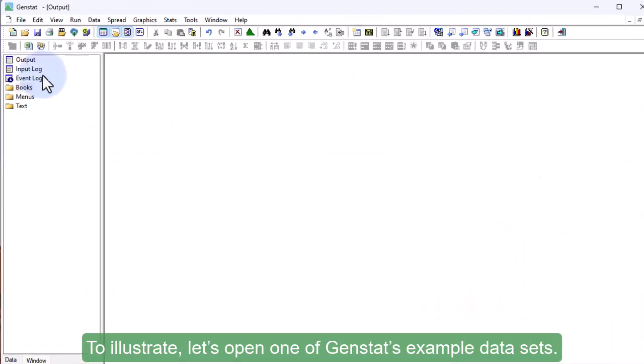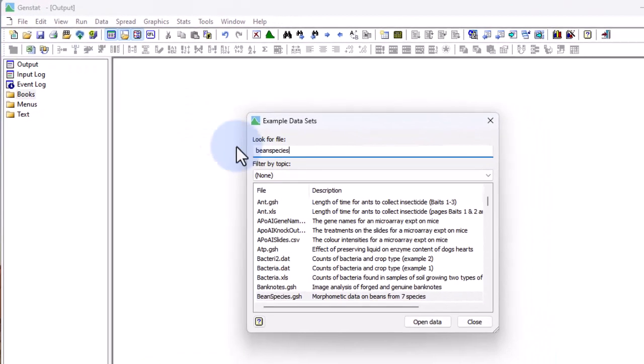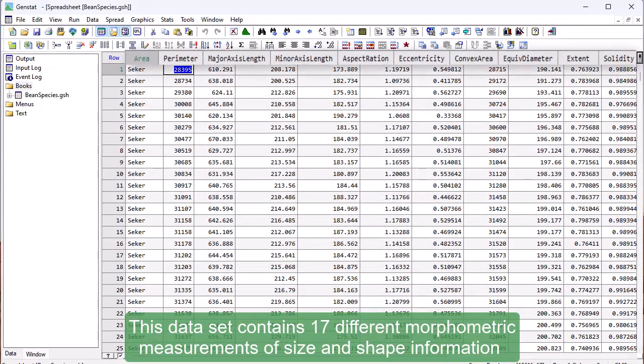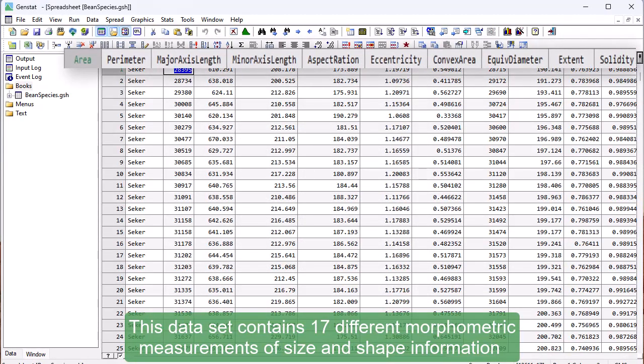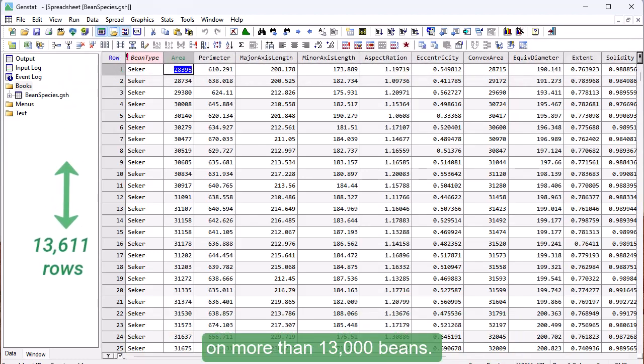This process continues until all cells with more than the minimum number of units have been allocated to a cluster. To illustrate, let's open one of GenStat's example datasets. This dataset contains 17 different morphometric measurements of size and shape information on more than 13,000 beans.